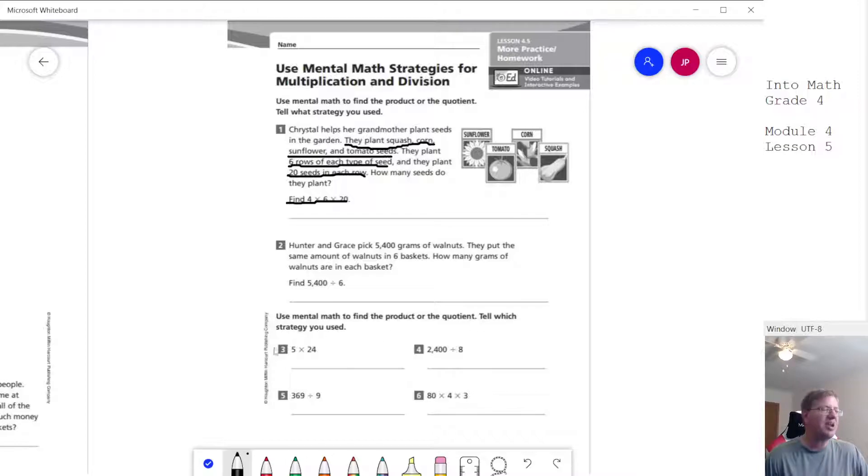And so it says tell which strategy you use. So we are going to find the exact answer and you're also going to say what you did. So for this one, we might break this one up and use place value to help us. So we could do 20 times 5 and then add the answer to 5 times 4 to that. Similar idea for this. Although that one, we don't have to break it up. This one, number 5, we would have to break it up using place value. So we might do 36 divided by 9 to find the number for the tens place and then 9 divided by 9 to find the number for the ones place, for instance.